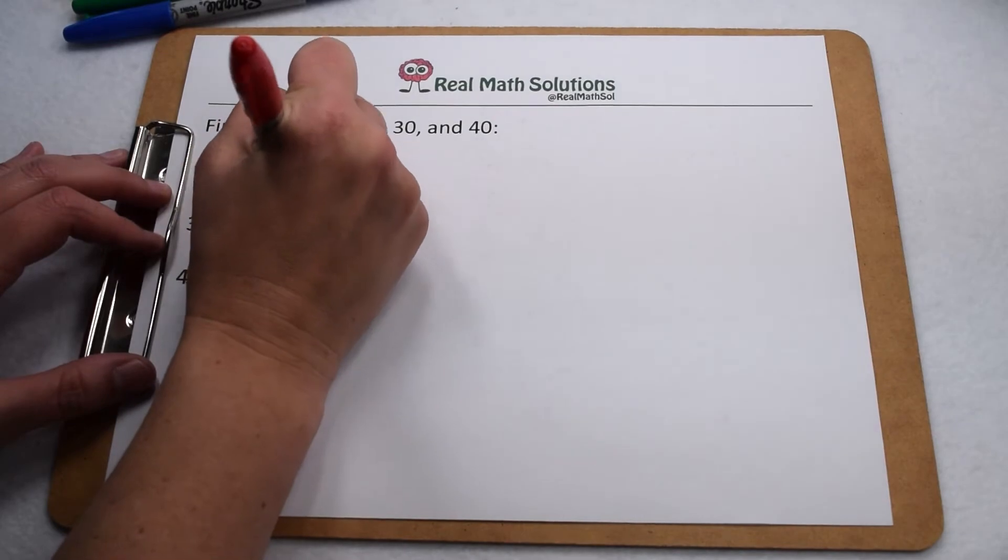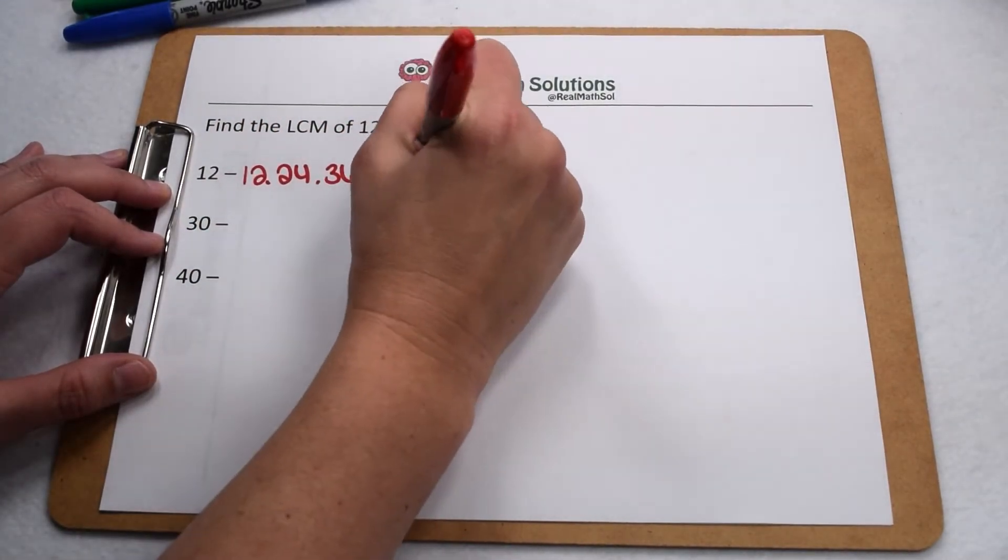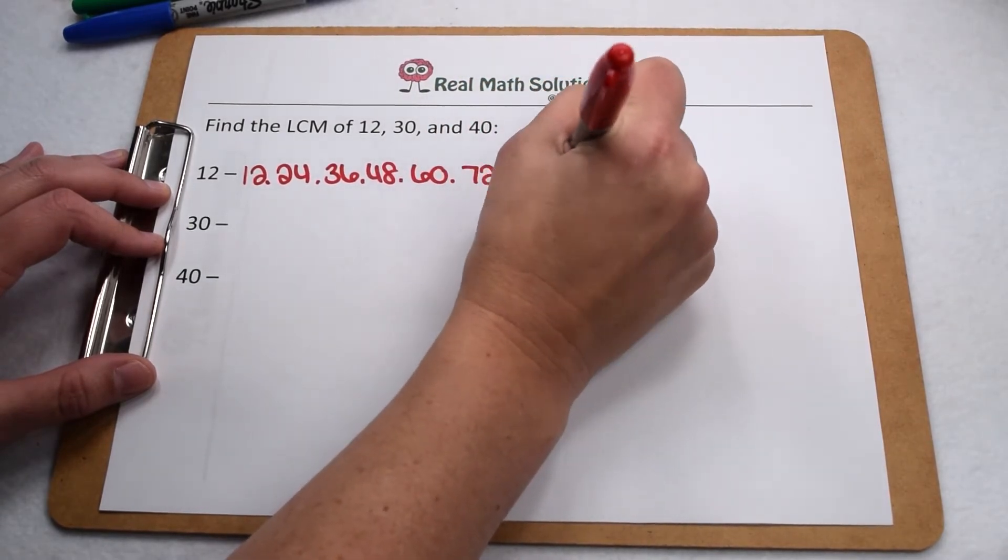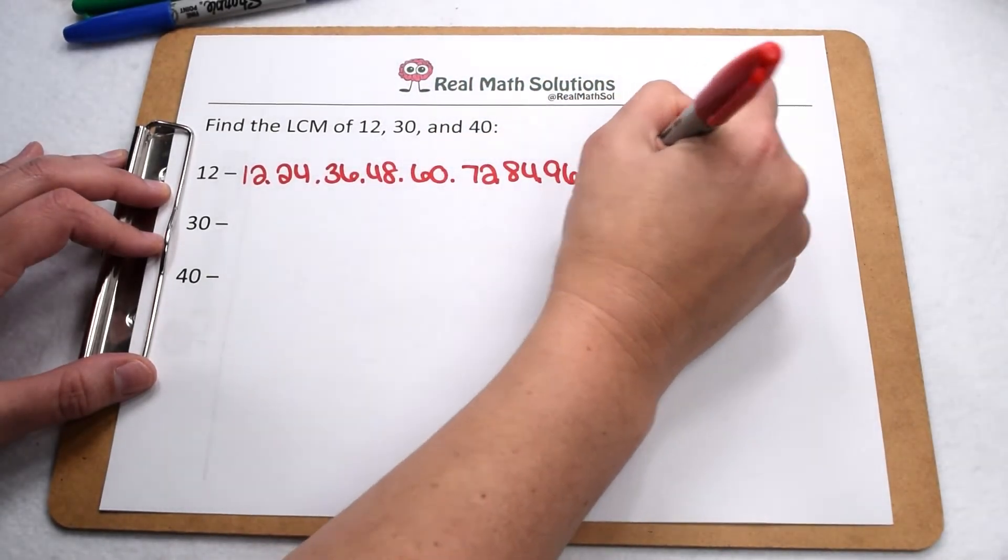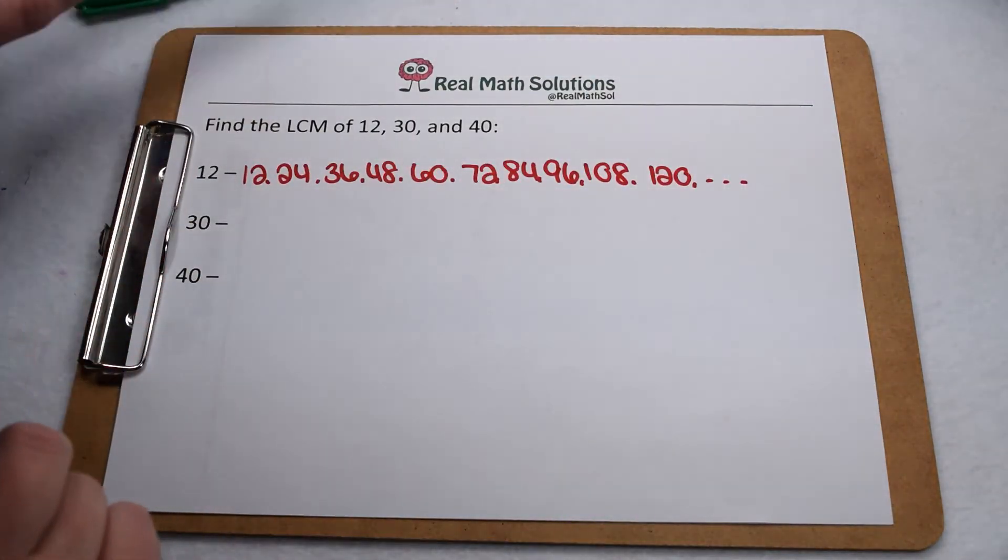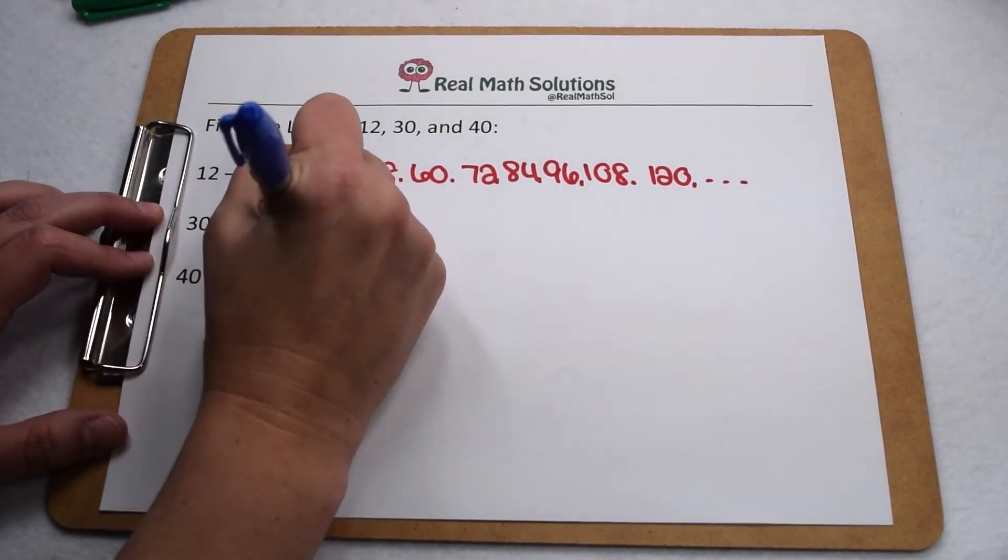So we'll start out by listing our multiples of 12 again: 12, 24, 36, 48, 60, 72, 84, 96, 108, and 120. Those are our first 10 multiples, so hopefully that'll be enough to have something in common with 30 and 40.